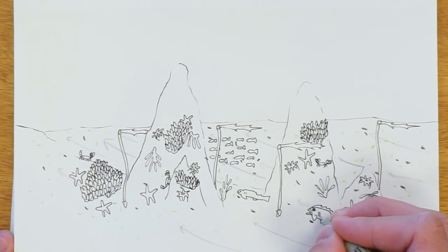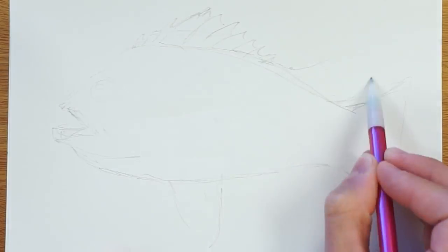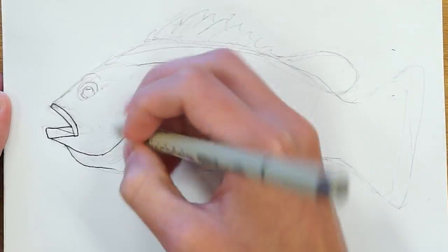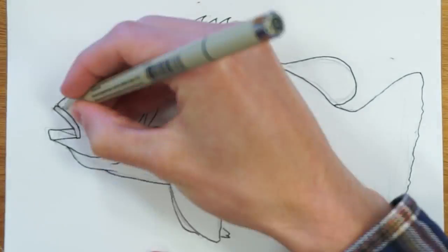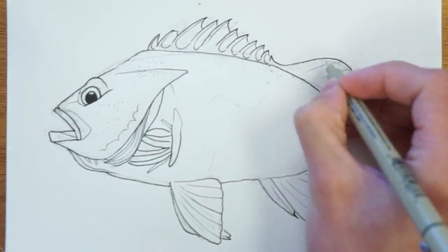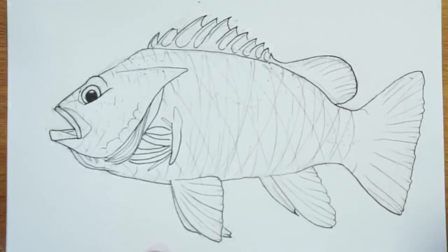And what would Redfish Rocks be without the redfish? Many species of rockfish can be found here, and many of them are bright red, like the vermilion rockfish. Some species of rockfish can live to be up to 150 years old.